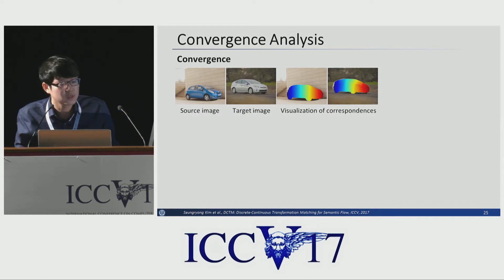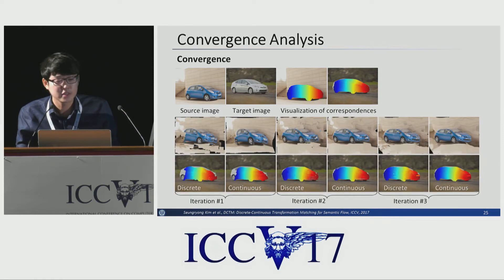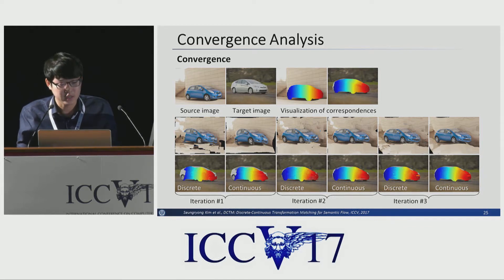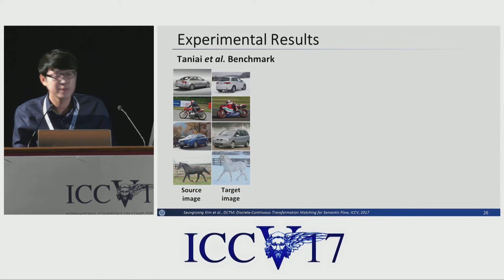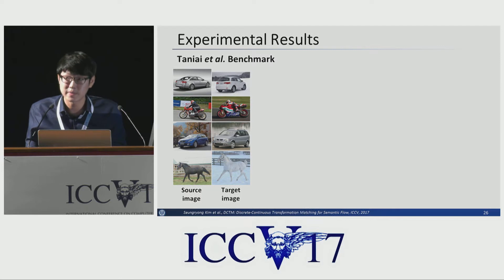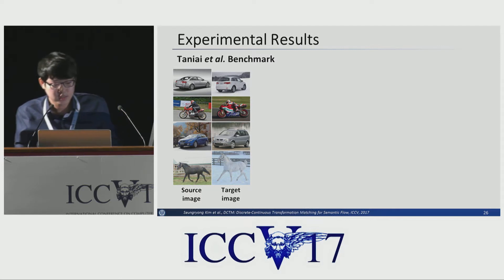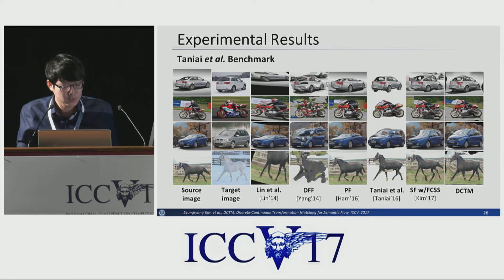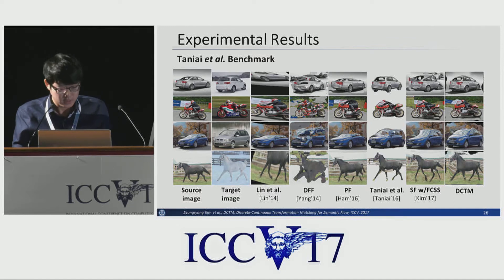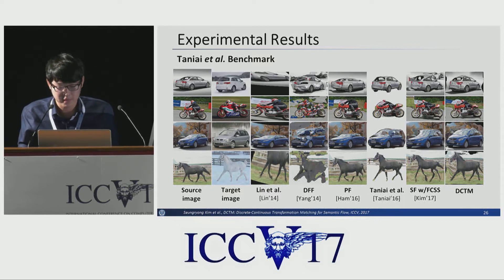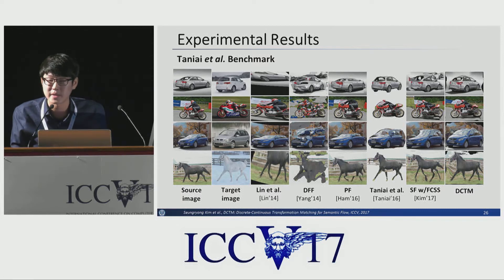As you can see here, we show the convergence analysis of our DCTM method. Given a source and target image that are semantically similar, as the iterations evolve, our DCTM method produces increasingly reliable dense correspondences. In the experimental results, we compare the dense semantic correspondence against other methods. The source image can be warped to the target image using the estimated dense correspondence. Compared to our DCTM method, state-of-the-art methods cannot show reliable performance, whereas DCTM reliably estimates dense correspondences under nonrigid deformation.